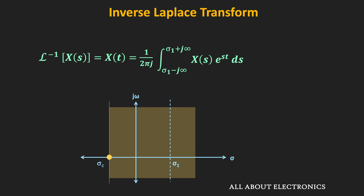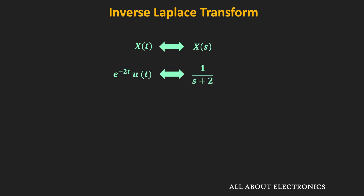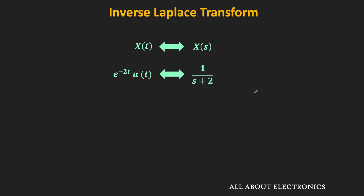During circuit analysis, we are not going to use that equation directly for finding the inverse Laplace transform. Instead, we will use the one-to-one correspondence between x(t) and X(s). We will make a lookup table of the Laplace transform for commonly used functions. For example, for a given x(t), if its Laplace transform is X(s), then the inverse Laplace transform of X(s) is x(t). For instance, the Laplace transform of e^(−2t)·u(t) is 1/(s+2), so the inverse Laplace transform of 1/(s+2) gives e^(−2t)·u(t). In the upcoming videos, we will see the detailed procedure for finding the inverse Laplace transform.